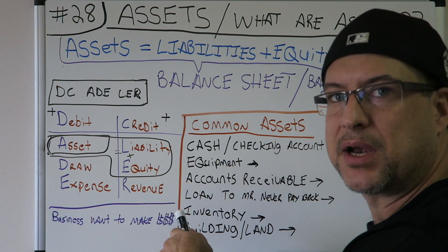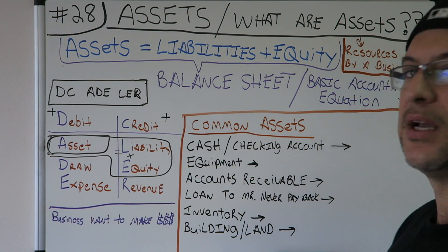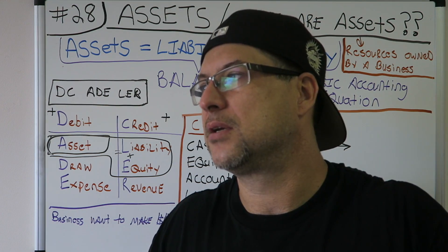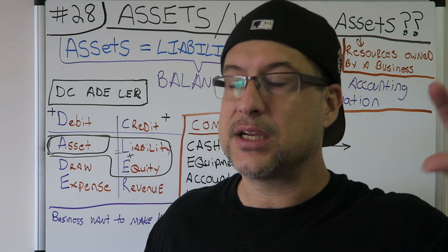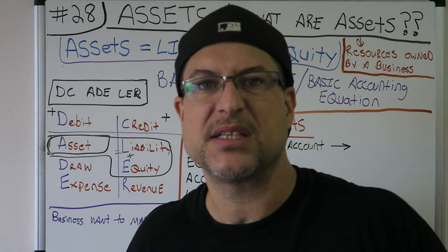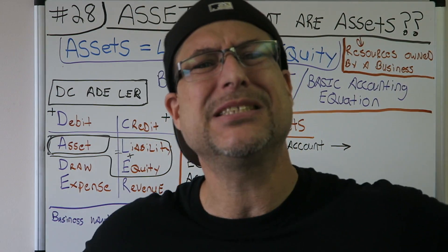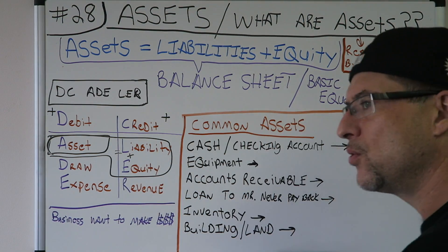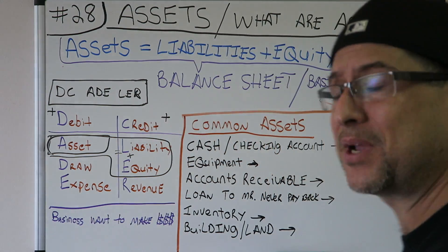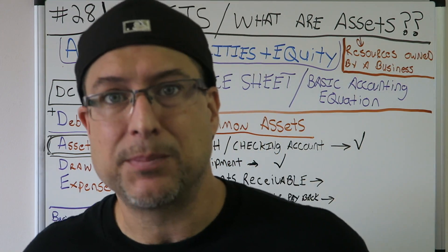Let's go through common assets you'd see in a journal entry. Cash — your checking account — can I make more money with it? Yes, it's an asset. Equipment — a laptop, a printer — is that going to help me make more money? Yes, it's a resource, it's an asset. Accounts receivable — someone owes me money, and when they pay I'll have more money to work with — yes, accounts receivable is an asset.